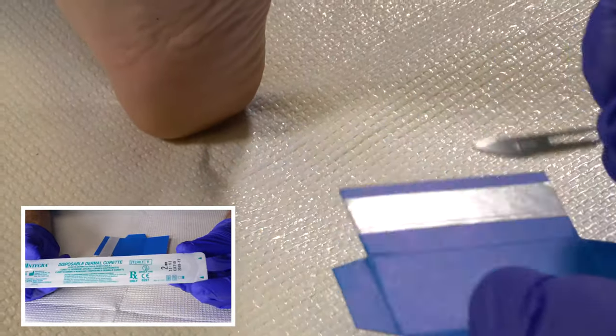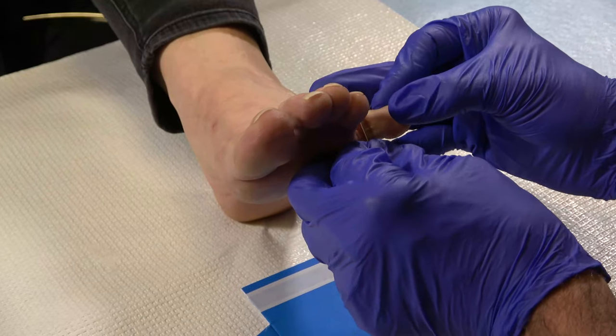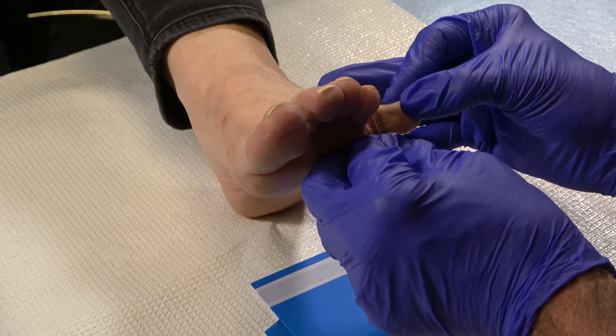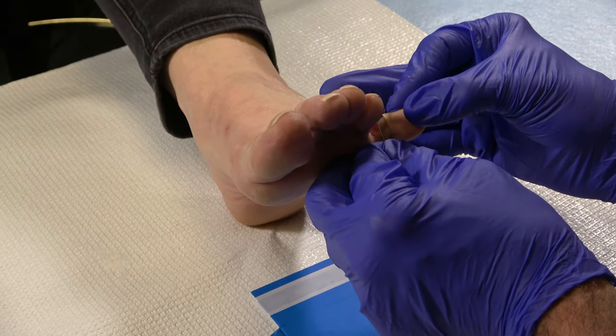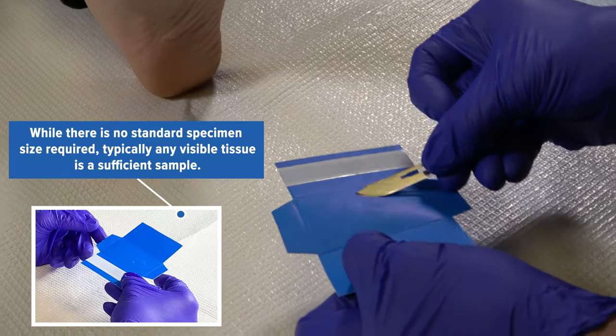Specimen collection may also be accomplished through an appropriate curette procedure. The specimen is collected into a specialized skin collection pack. Place the specimen on the colored surface—this allows the collector and the laboratory to clearly visualize the sample.